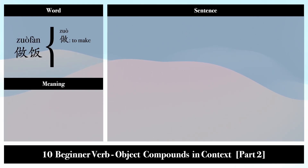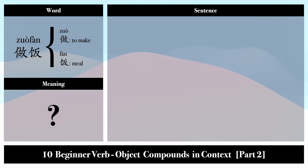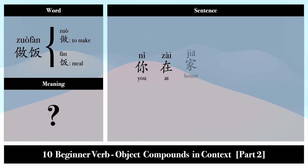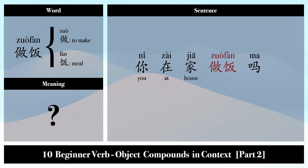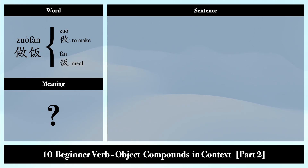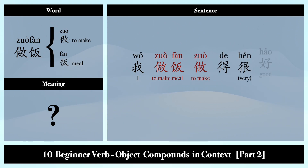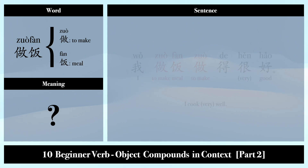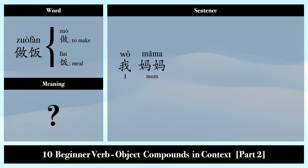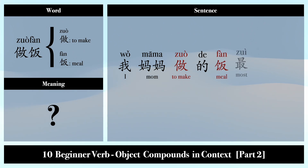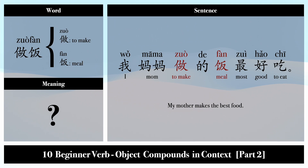做饭 — 做: to make, 饭: meal. Example sentences: 你在家做饭吗? (Do you cook at home?) 我做饭做得很好。(I cook very well.) 我妈妈做的饭最好吃。(The food my mom makes is the most delicious.)